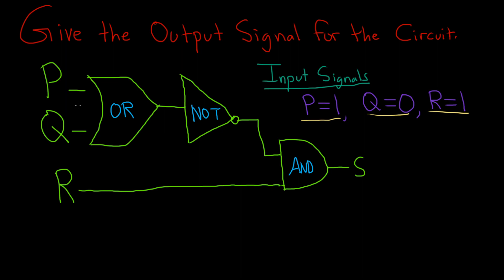So the way I like to do this is I start by writing down the input signals on the diagram. So here's 1, here's 0, and then here's 1.